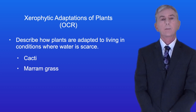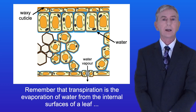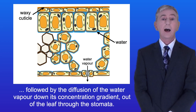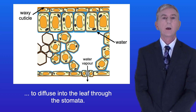In the last video we looked at the factors that affect the rate of transpiration in plants. Remember that transpiration is the evaporation of water from the internal surface of a leaf, followed by the diffusion of the water vapor down its concentration gradient out of the leaf through the stomata. Now in order to photosynthesize, plants must allow carbon dioxide to diffuse into the leaf through the stomata. However, plants run the risk of losing too much water by transpiration.